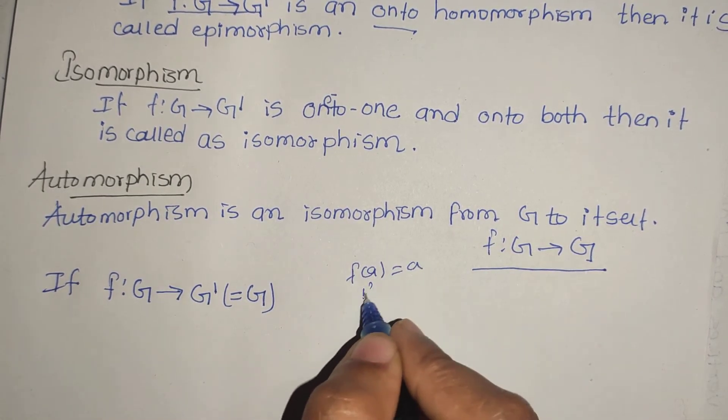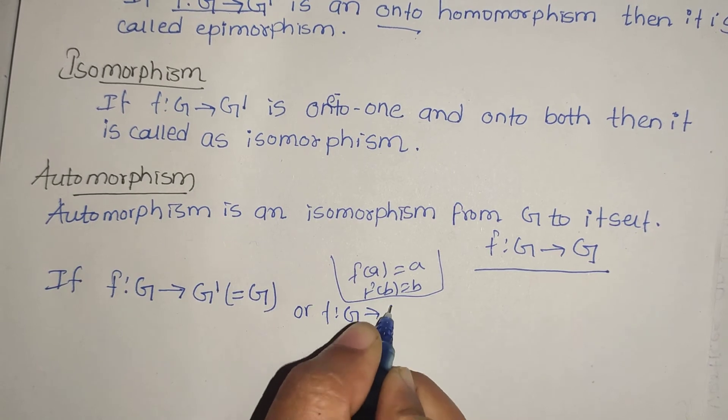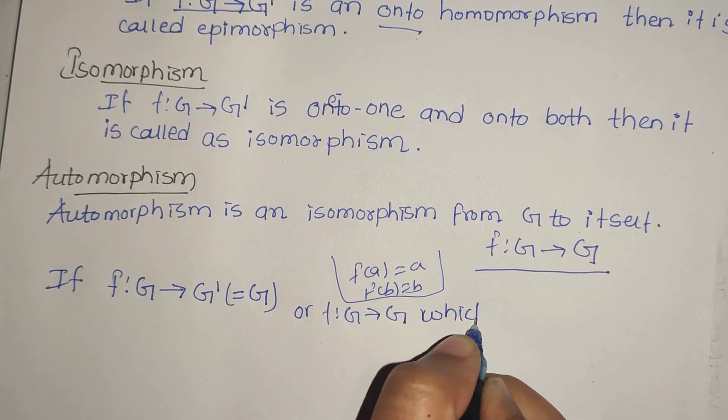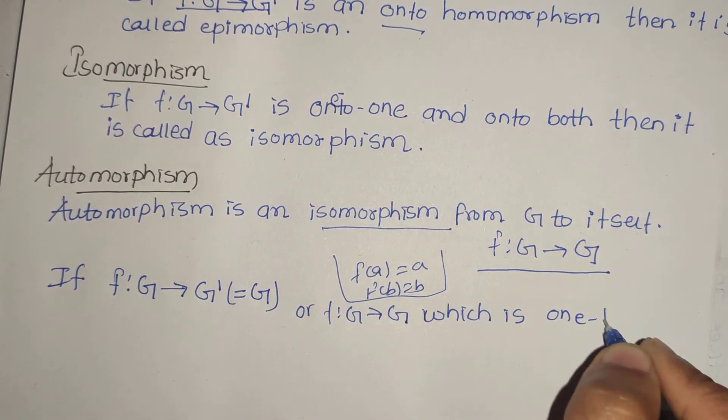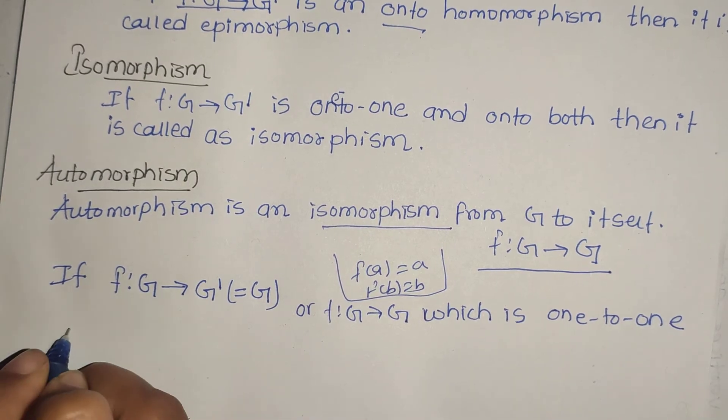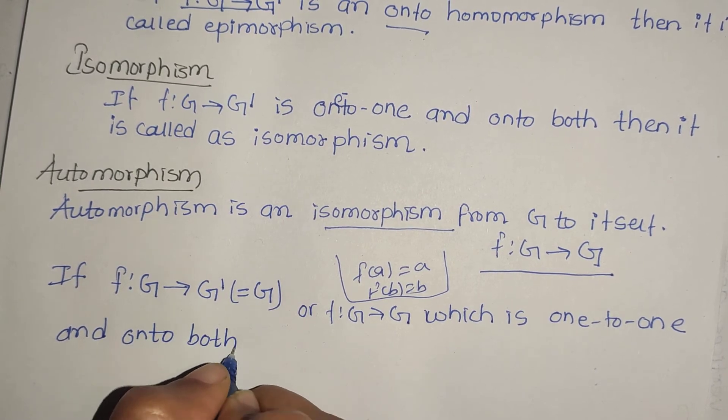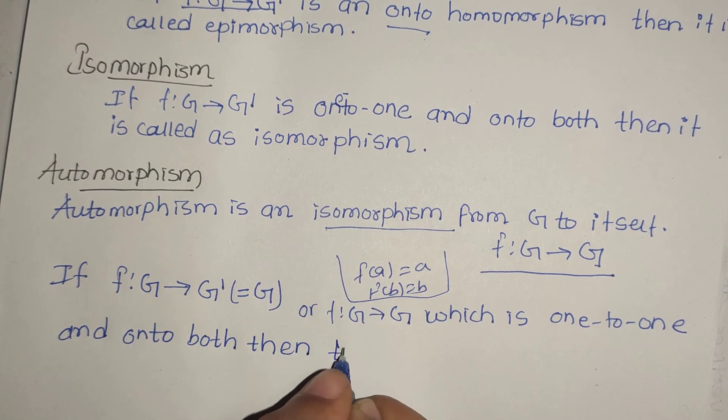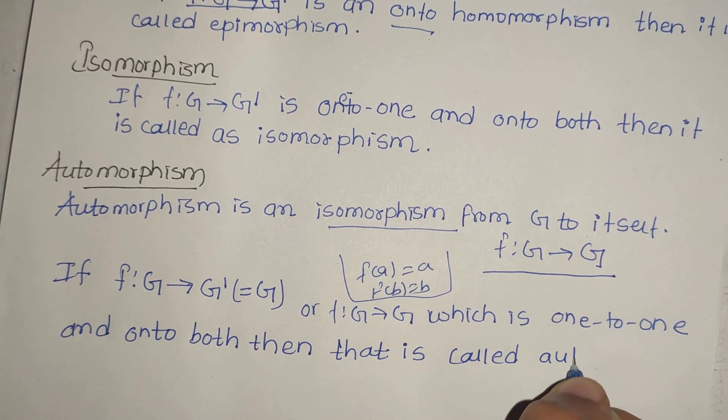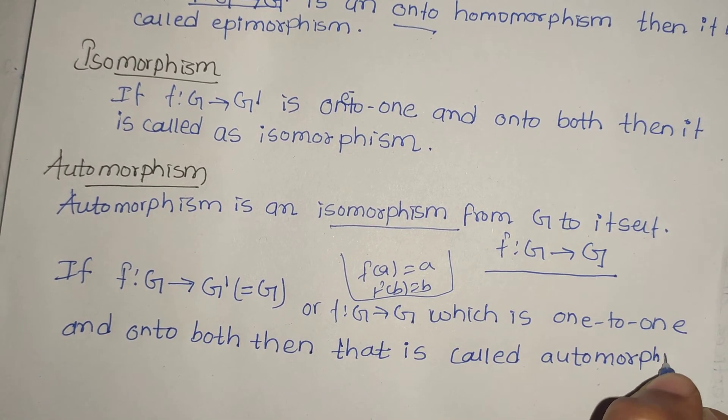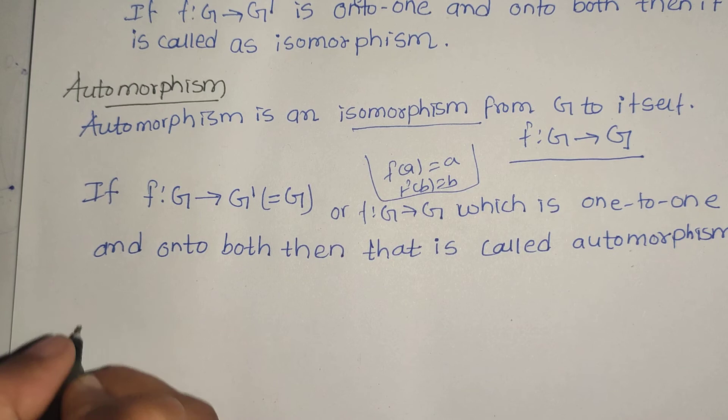In other words, if f: G → G' where G' is actually equal to G - meaning f(a) maps to a within the same group - and f: G → G is one-to-one and onto both, then that is called automorphism.